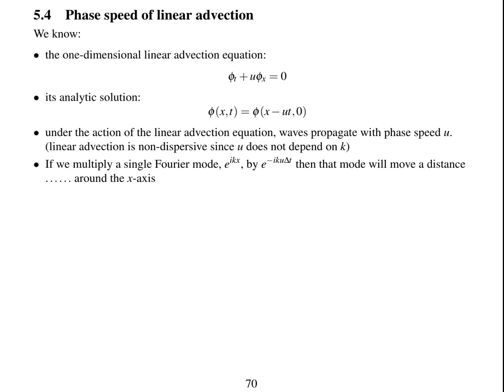Another thing we know—we're going to put all these facts together at the end. If we multiply a single Fourier mode by e to the ikx, if we multiply it by e to the minus iku delta t, then that mode will move a distance around the x-axis. What distance will it move?